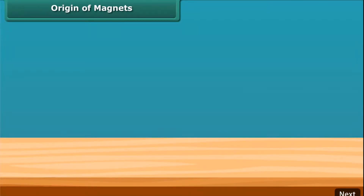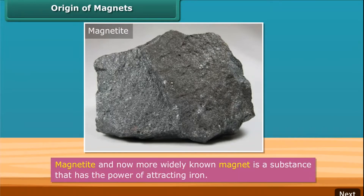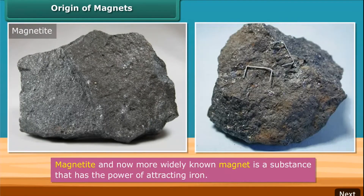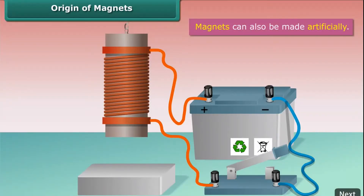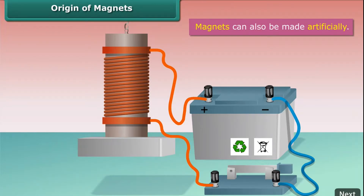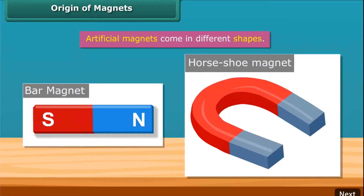Origin of Magnets. Magnetite is a natural magnet and contains iron. In later days, this was more widely known as a magnet — a substance that has the power of attracting iron. Magnets can also be made artificially; however, the process of making artificial magnets is a recent discovery. Artificial magnets come in different shapes, for example, bar magnet, horseshoe magnet, etc.